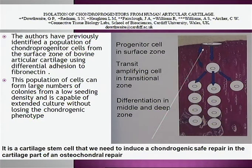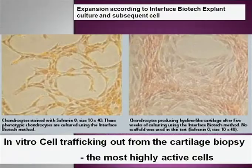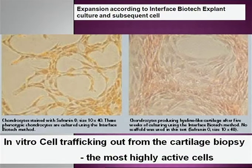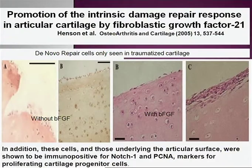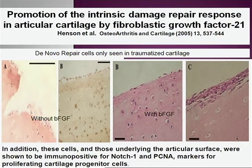When talking about stem cells for cartilage, we could talk about stem cells within cartilage as well as stem cells in bone marrow. The cartilage stem cells are what we need to induce a chondrogenic safe repair in the cartilage part of an osteochondral repair if we only want cartilage tissue. If you put a piece of cartilage into cell culture, cells traffic out from the cartilage biopsy — these highly active cells have the same markers as the superficial zone, meaning they could be the stem cells we want for better repair. And if you stimulate with FGF, you get even better outgrowth.